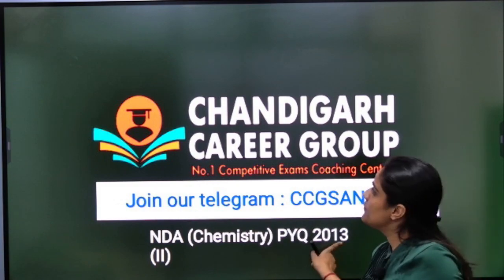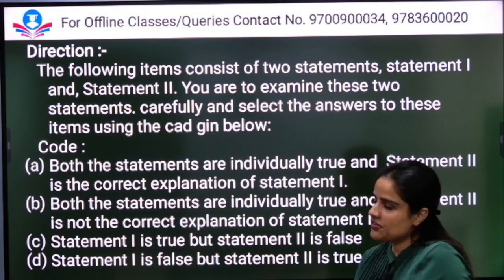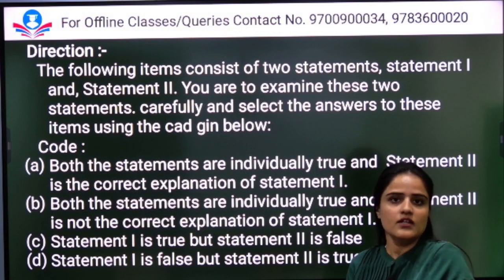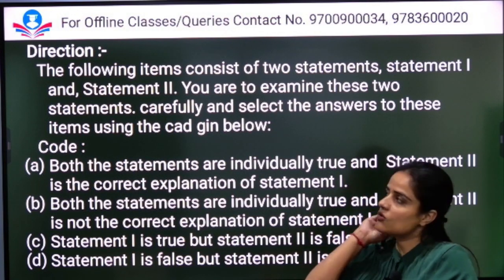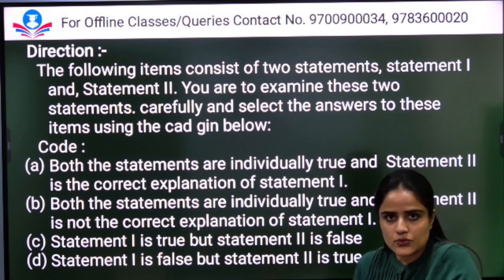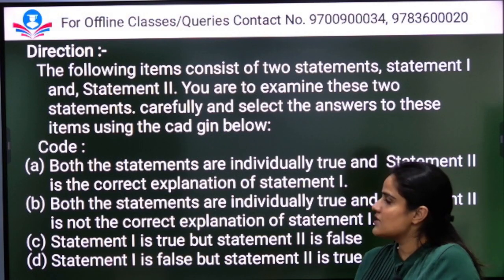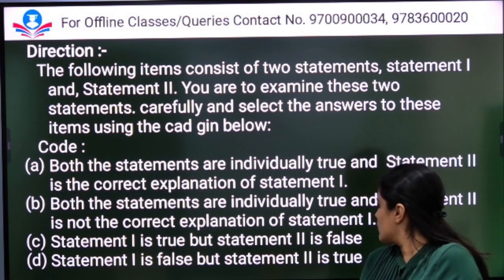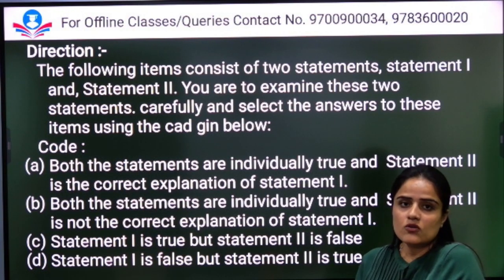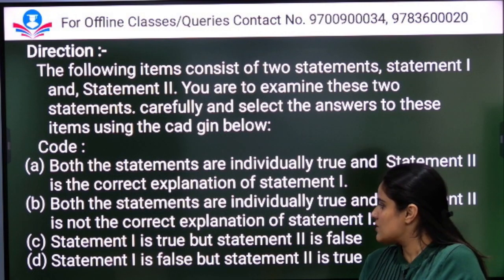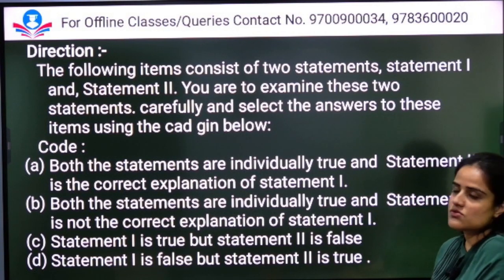The first question type involves directions for statement-based questions. Option A: both statements are individually true and statement two is the correct explanation of statement one. Option B: both statements are individually true but statement two is not the correct explanation of statement one. Option C: statement one is true but statement two is false. Option D: statement one is false but statement two is true.